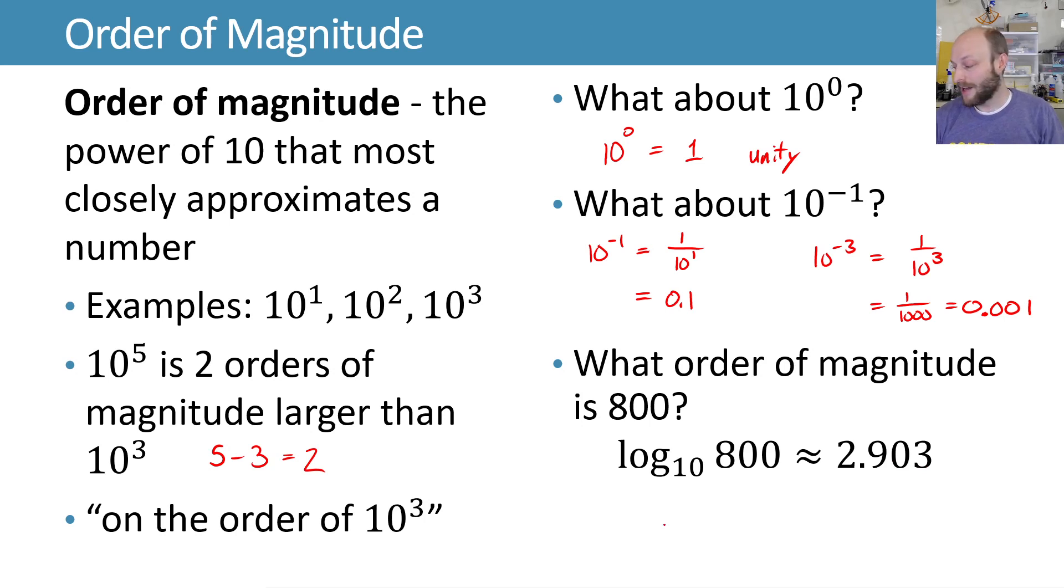What that means is if I were to take 10 and raise it to the power 2.903, that gives me 800. So that gives us the order of magnitude. So between 2 and 3, where is it? Well, it's 2.9. That's the exponent. And we can round that to the first digit and say that that's on the order of 10 to the third, or order magnitude 3.